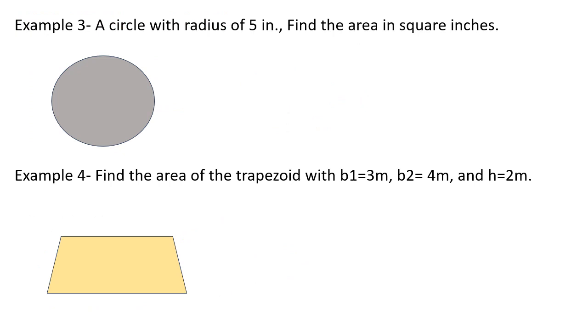Example 3: A circle with radius of 5 inches. Find the area in square inches. Area equals pi r squared, equals pi times 5 inches squared, equals 25 pi inches squared.